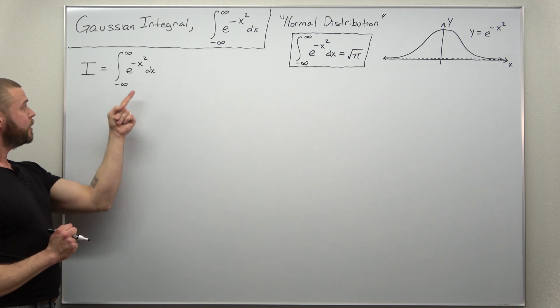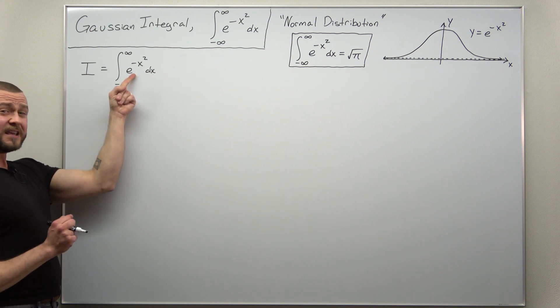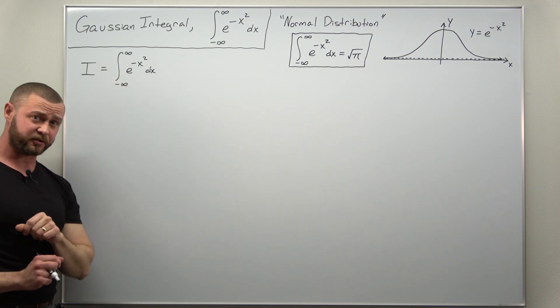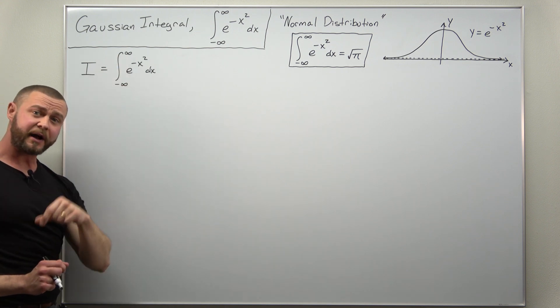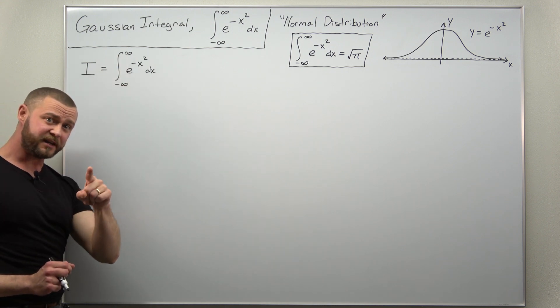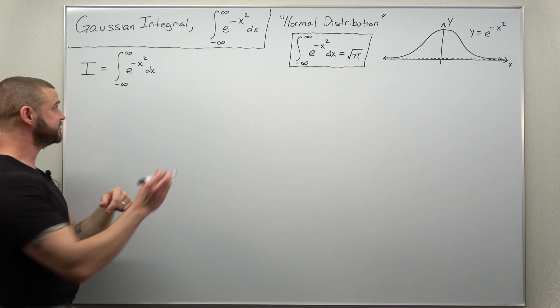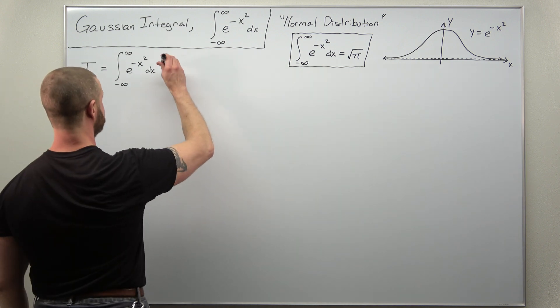Let's get started. We're first going to simplify our integral I. We have an even function over a symmetric interval, so I can rewrite this as double the integral from zero to infinity.